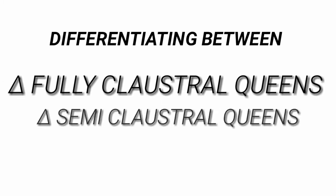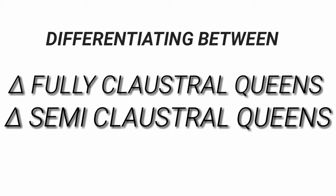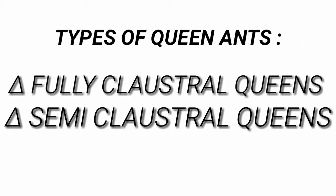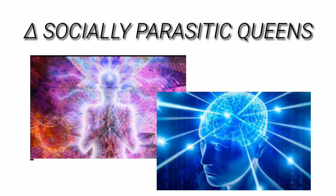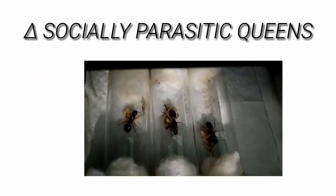Today's topic is about differentiating between the two major types of queen ants that people keep, which are fully and semi claustral. But there are actually three types of queen ants: first fully claustral, then semi claustral, and the third type are socially parasitic queens. Because socially parasitic queens are very complicated and are rarely kept in captivity, we don't have to talk about them for now.